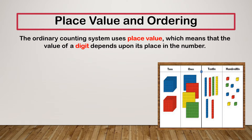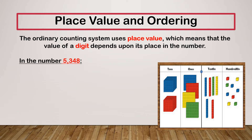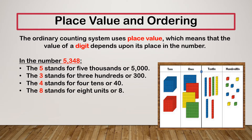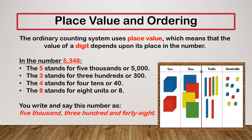Place value and ordering: the ordinary counting system, which is what we use, uses place value, which means that the value depends on where it is. So, for example, in the number 5,348, that 5 is five thousands, the 3 is three hundreds, the 4 is 40 or four tens, and the 8 is eight units or eight. So we need to be able to understand what each of those digits represent.